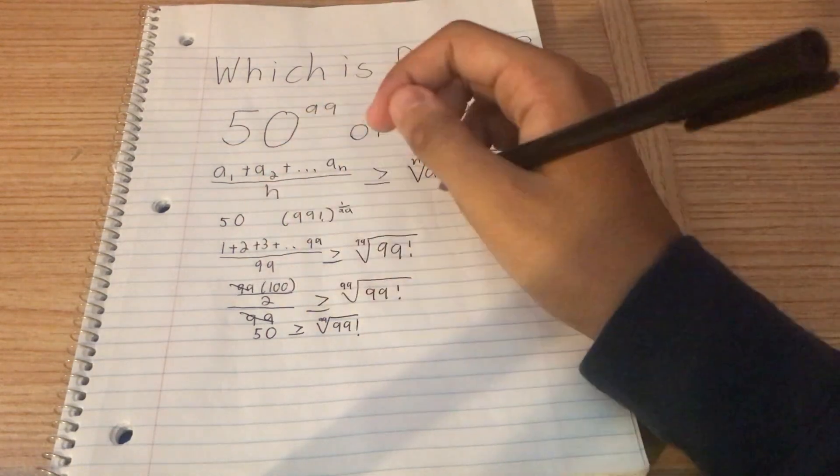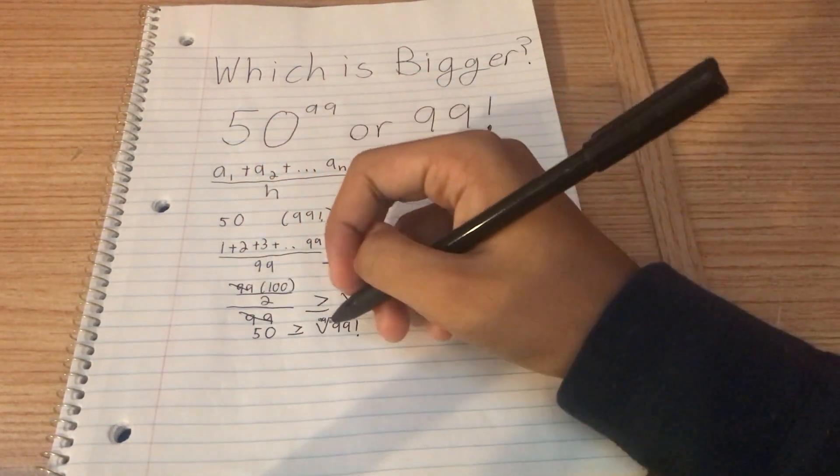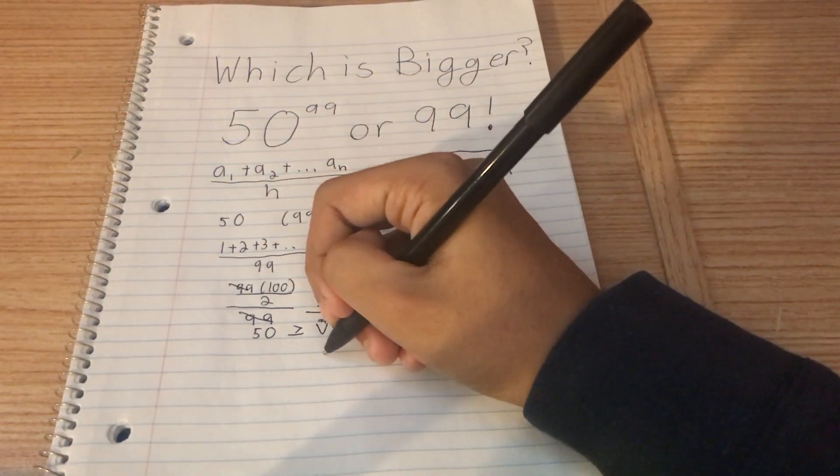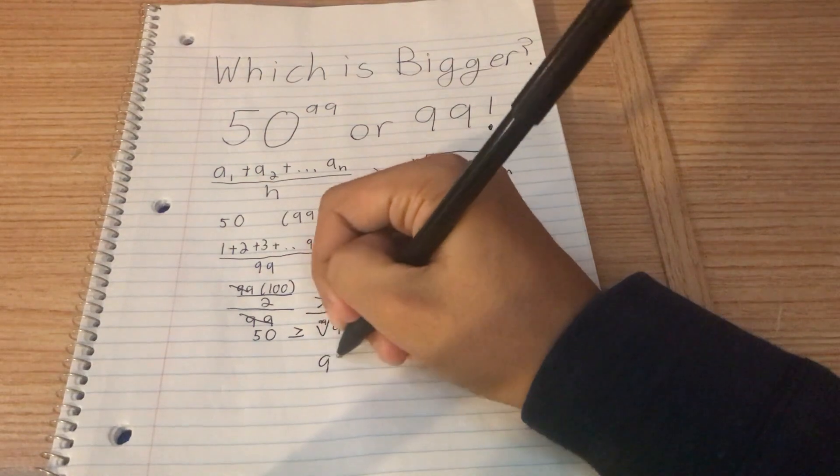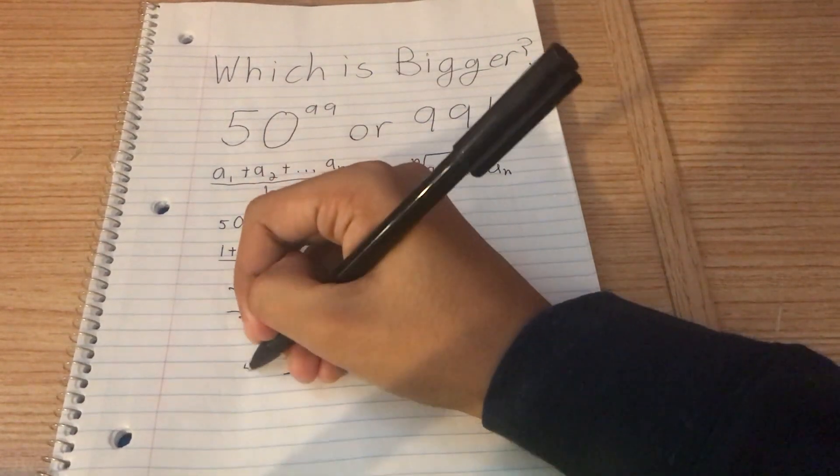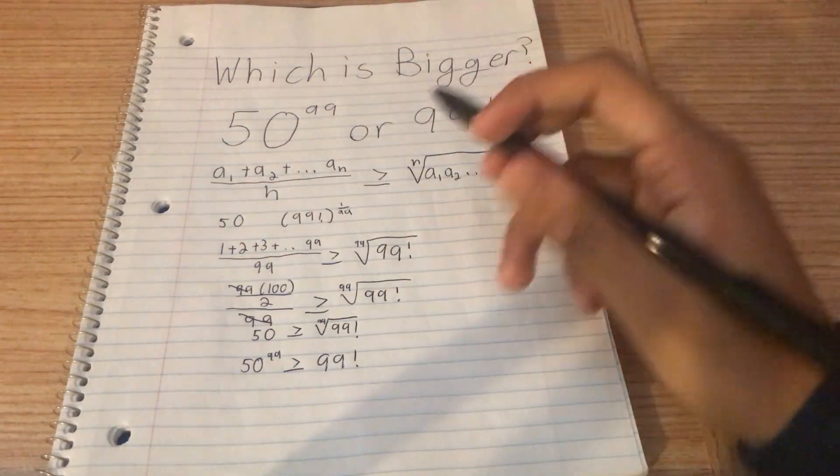And that is greater than or equal to the 99th root of 99 factorial. And finally, take the power of 99 on both sides. So 50 to the power of 99, and then this to the power of 99. This 99th root will get canceled at the 99th power. And you get 99 factorial on this side. And then you get 50 to the power of 99 on that side. And we are almost done.